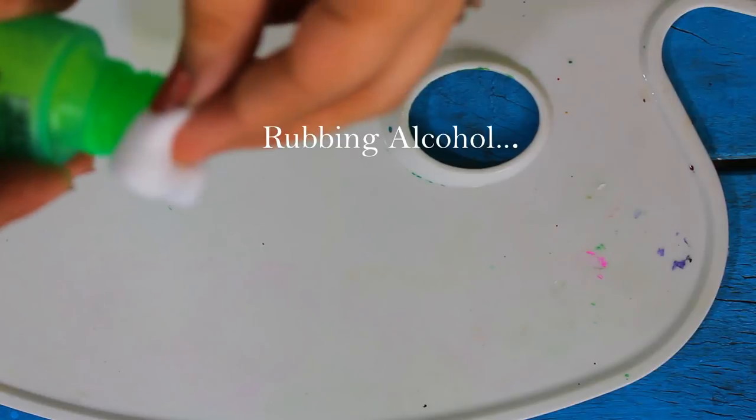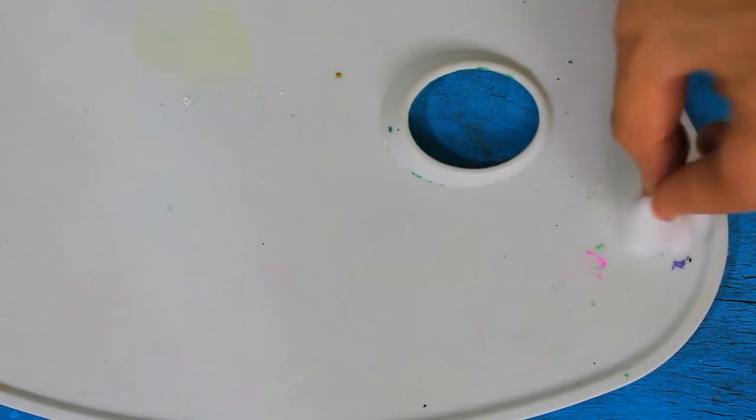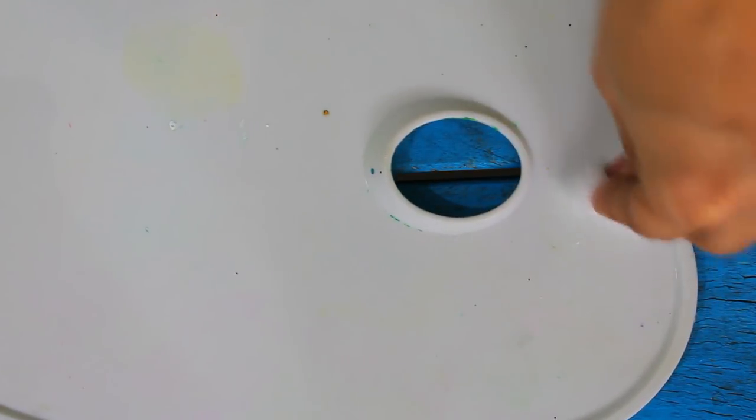Even after this, if you see that the color is not removed from the palette, then you can take this rubbing alcohol and apply it to the color palette and the color will be removed there and then. Now your color palette is all ready to be used.